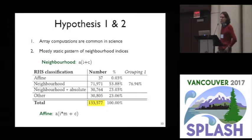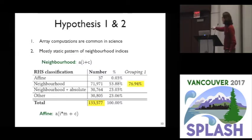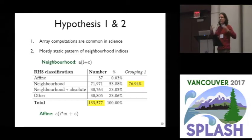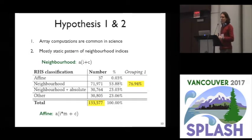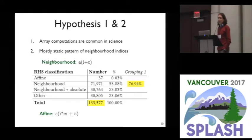We also threw affine indices into the mix — that's when you multiply by a scalar then add a scalar. We found that just over 75% of all array computations read from arrays using neighborhood indexing or affine indexing. Affine was actually relatively uncommon; that usually corresponds to hand-rolled optimizations, and people tend to let the compiler do it rather than doing it themselves.